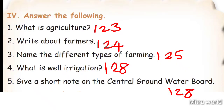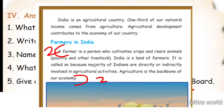Question 2: Write about farmers. Take page number 124. A farmer is a person who cultivates crops and rears animals. India is a land of farmers, because majority of Indians are directly or indirectly involved in agricultural activities. Agriculture is the backbone of our economy.